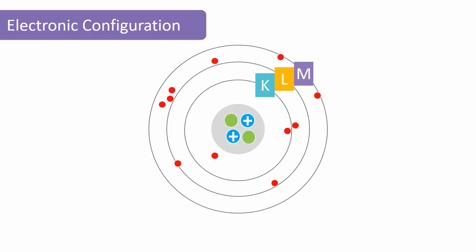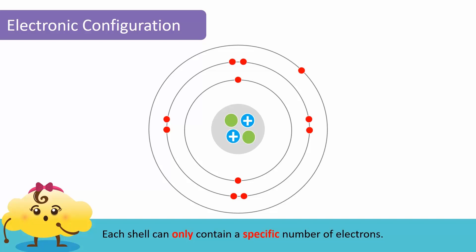Electrons are not arranged randomly in these shells. They start by occupying the shell closest to the nucleus, which is the K shell. Once the K shell is full, the electrons fill up the next one and so on. Each shell can only contain a specific number of electrons.